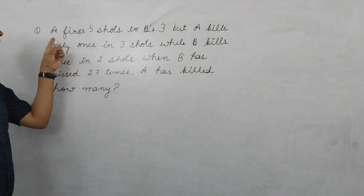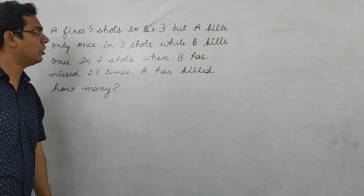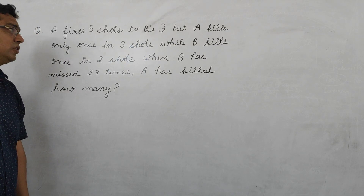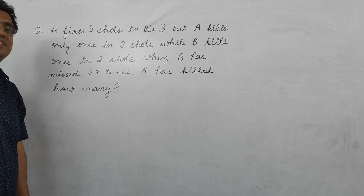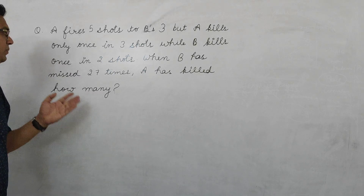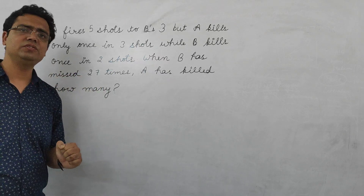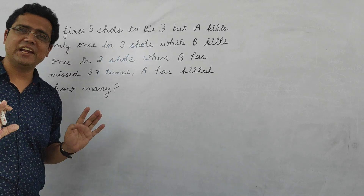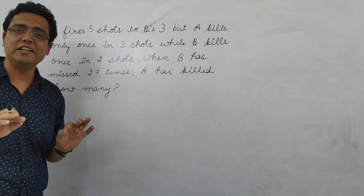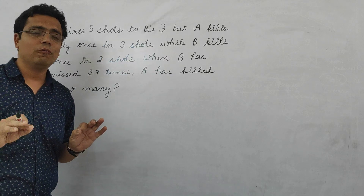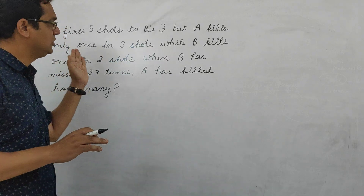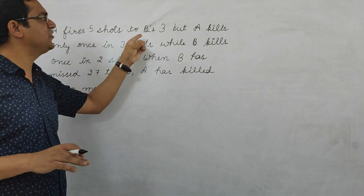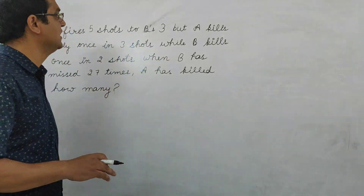Question: A fires 5 shots to B's 3, but A kills once in 3 shots while B kills once in 2 shots. When B has missed 27 shots, how many has A hit? The statement is very misleading. First line: A fires 5 shots to B's 3.